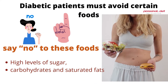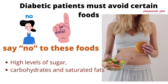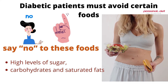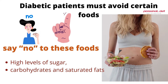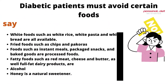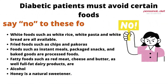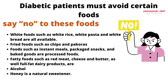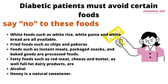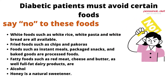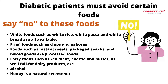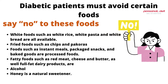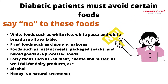Diabetic patients must avoid certain foods. You must not only choose the right foods but also eliminate bad foods from your diabetes diet. High levels of sugar, carbohydrates, and saturated fats can worsen existing conditions and even cause heart disease. Say no to white foods such as white rice, white pasta, and white bread, fried foods such as chips and pakoras, and processed foods such as instant meals, packaged snacks, and baked goods.